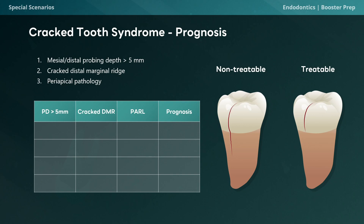I'm going to introduce four different scenarios and the resulting diagnosis for each. In the first situation, we have a cracked tooth that does not have a deep probing depth, has an intact distal marginal ridge, and no periapical pathology. The diagnosis is favorable — we either put an orthodontic band over it and a crown later if symptoms are alleviated, or we initiate root canal therapy and a final restoration if the tooth is necrotic or irreversibly inflamed.